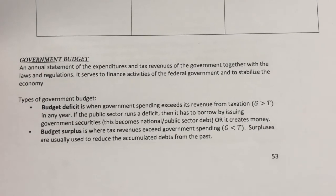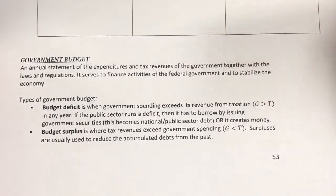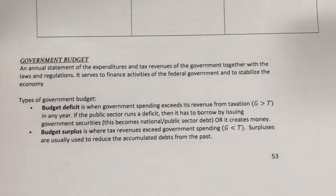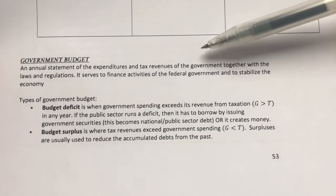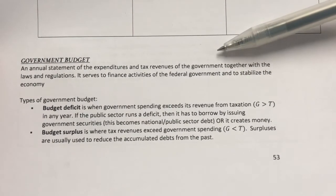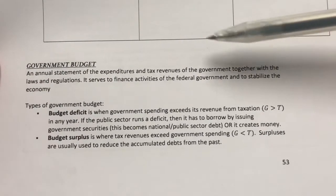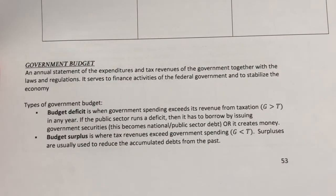In today's video, we're going to learn a little bit about government budget. So what's a government budget? It's basically an annual statement of expenditures and tax revenues of the government together with the laws and regulations. It serves to finance activities of the federal government and to stabilize the economy.